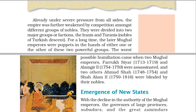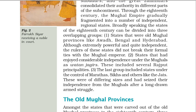Emergence of new states. With the decline in the authority of the Mughal emperors, the governors of large provinces — Subadars — and the great Zamindars consolidated their authority in different parts of the subcontinent. Through the 18th century, the Mughal empire gradually fragmented into a number of independent regional states. Broadly speaking, the states of the 18th century can be divided into three overlapping groups.